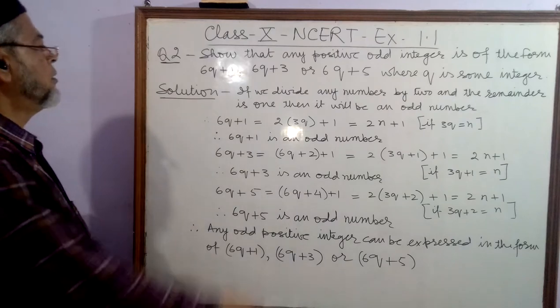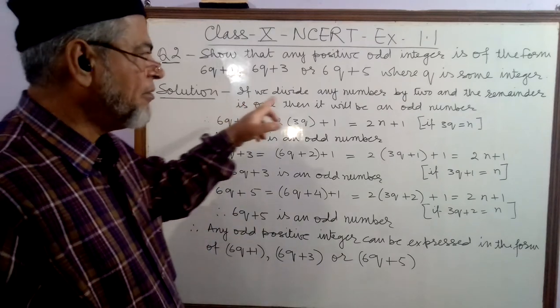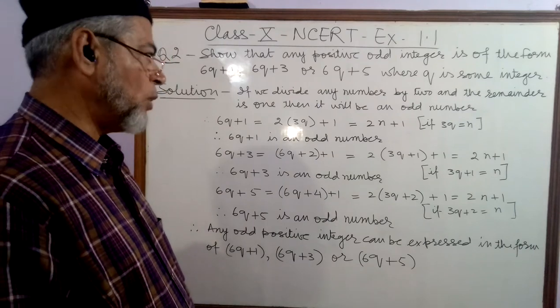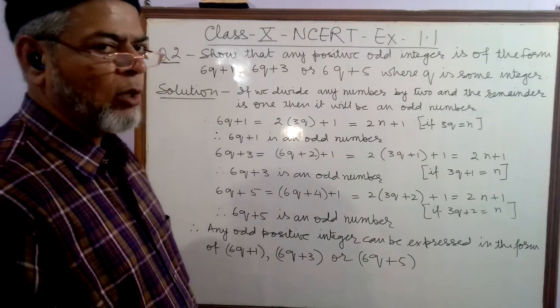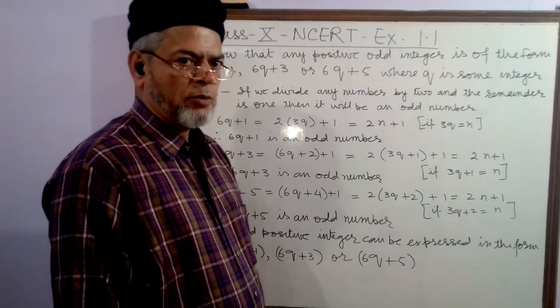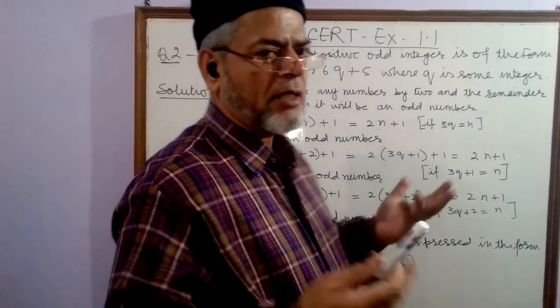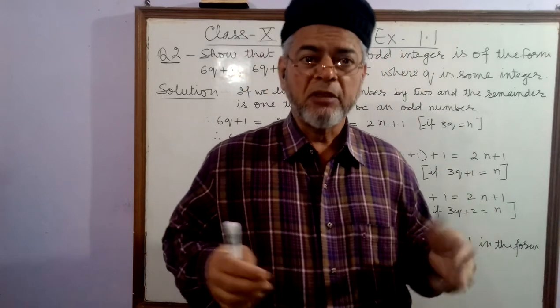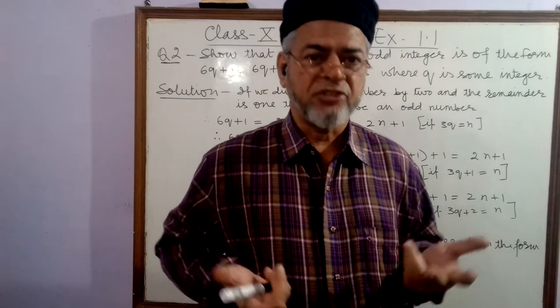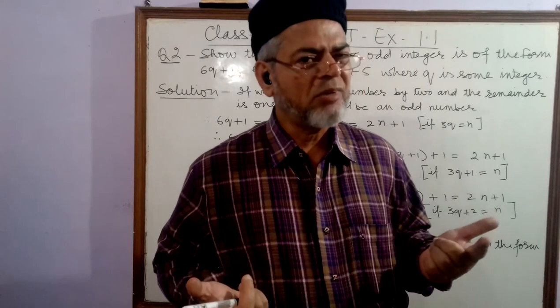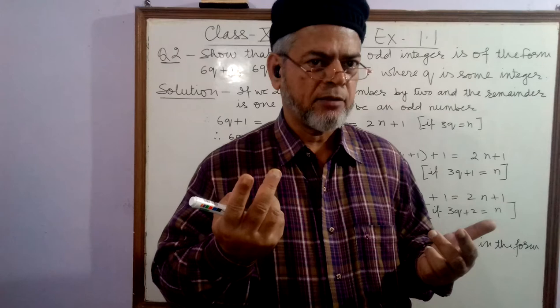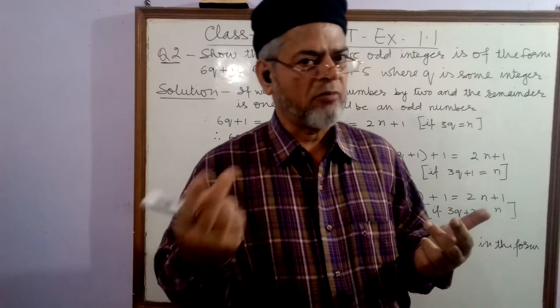So, the solution: If we divide any number by 2 and the remainder is 1, then it will be an odd number. There are only two chances if we divide any number by 2. Either it will be fully divided and the remainder is 0, or the remainder is 1. Because there are only two options: Either remainder is 0 or 1.